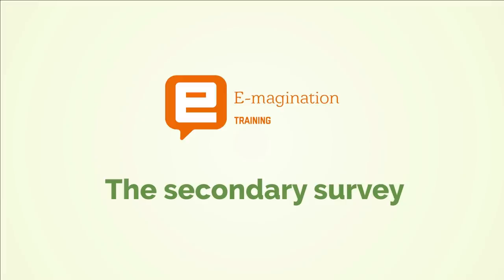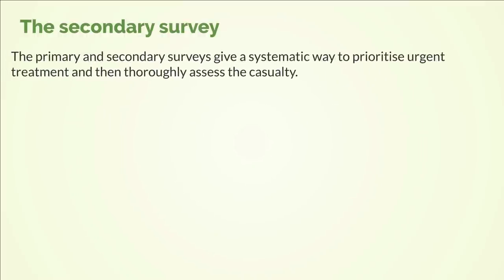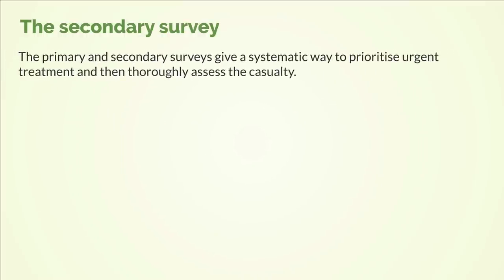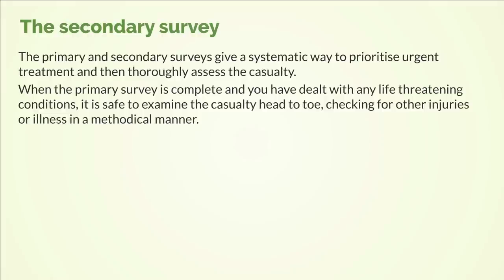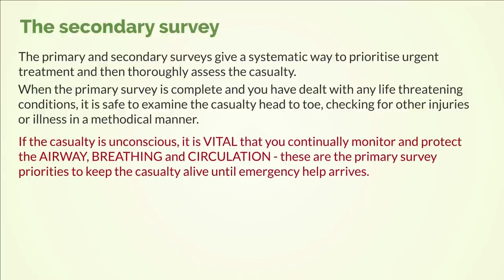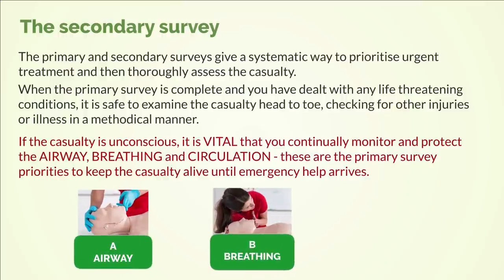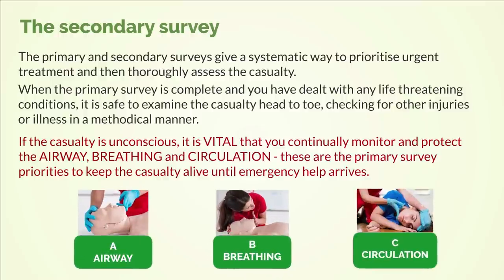The secondary survey. The primary and secondary surveys give a systematic way to prioritise urgent treatment and then thoroughly assess the casualty. When the primary survey is complete and you have dealt with any life-threatening conditions, it is safe to examine the casualty head to toe, checking for other injuries or illness in a methodical manner. If the casualty is unconscious, it is vital that you continually monitor and protect the airway, breathing and circulation — these are the primary survey priorities to keep the casualty alive until emergency help arrives.